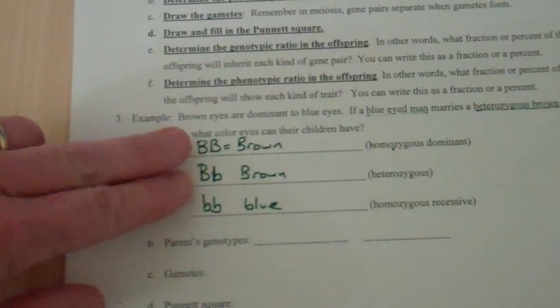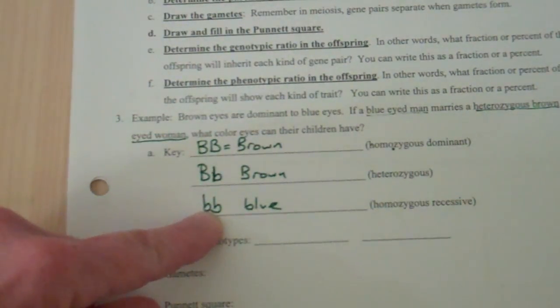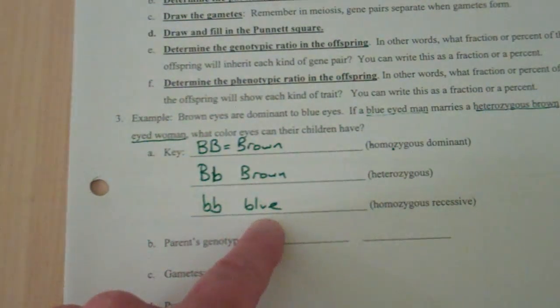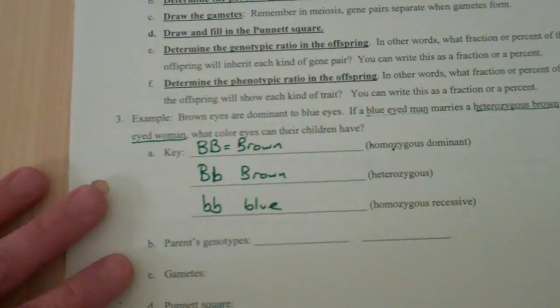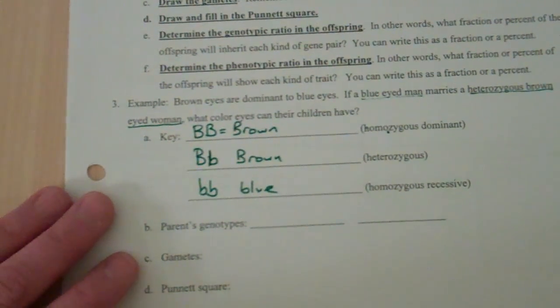So after we do this, it's important to know that this side are your genotypes, and this side are your phenotypes listed. Next, you list the parents' genotypes.